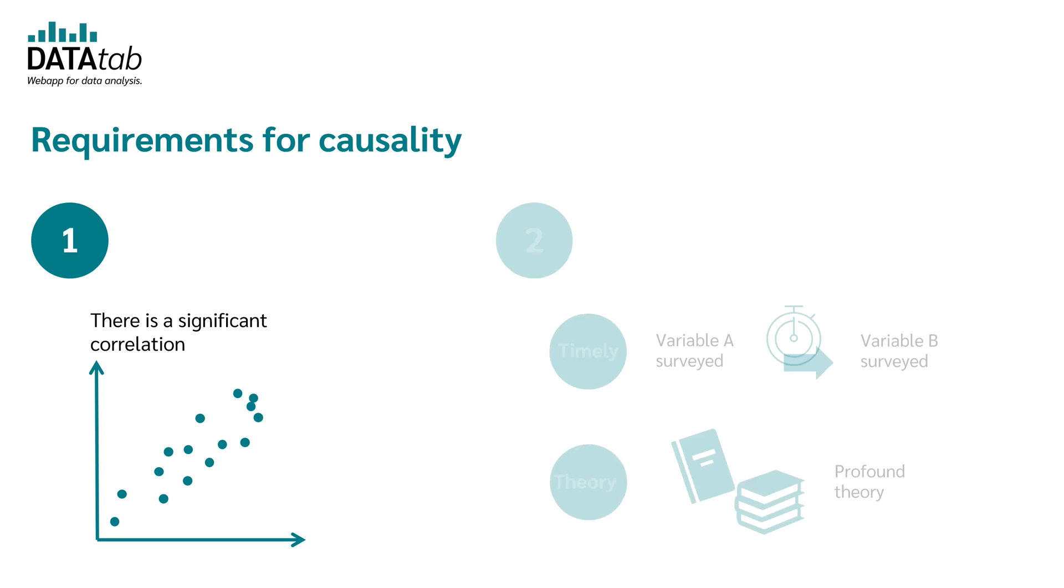The second condition can be satisfied in two ways. First, it is satisfied if there is a temporal ordering of the variables. So, variable A was collected temporally before variable B. Furthermore, the second condition can be fulfilled if there is a theoretically founded and plausible theory in which direction the causal relationship goes.